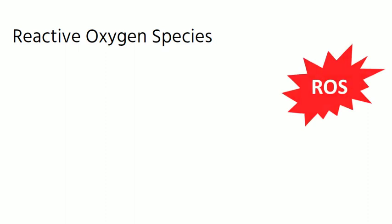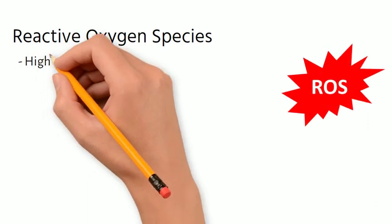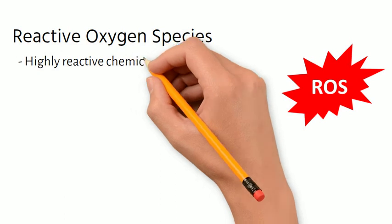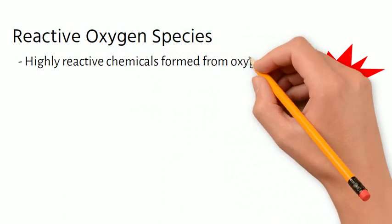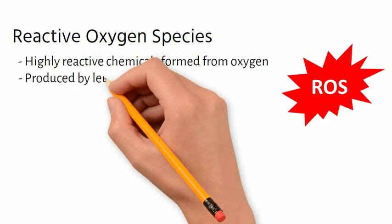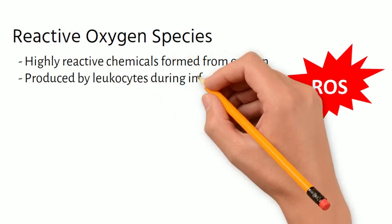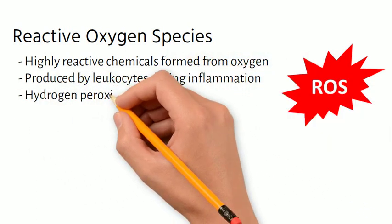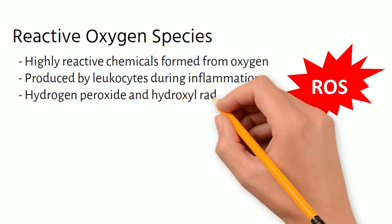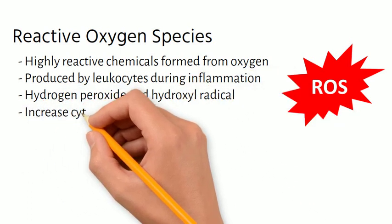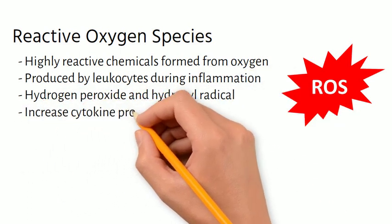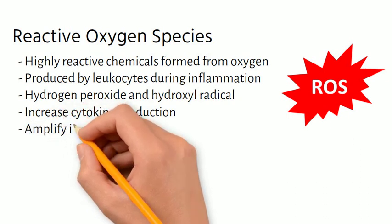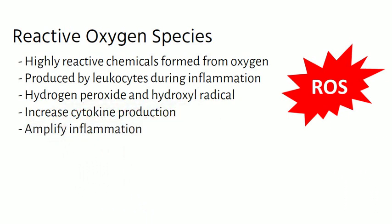Reactive oxygen species are highly reactive chemicals formed from oxygen. They are produced by leukocytes during inflammation and include hydrogen peroxide and hydroxyl radicals. Reactive oxygen species increase cytokine production and amplify inflammation.